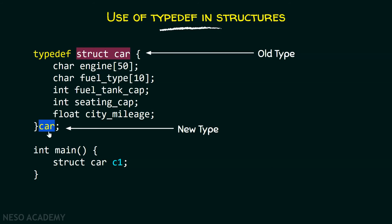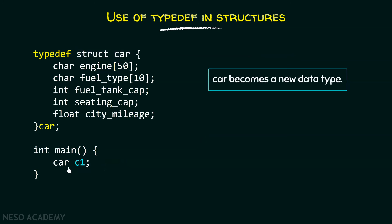This is the old type and this is the new type. Now, we can replace this whole struct car by car. Now, car becomes a new data type.